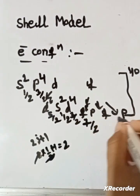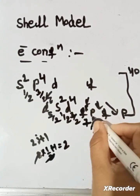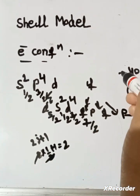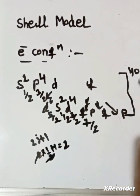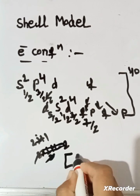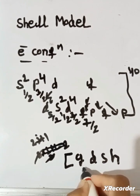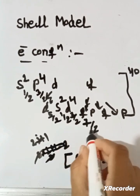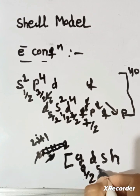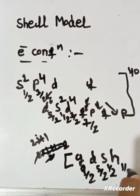For F, j = 7/2, so nucleons = 8. Then F (j=7/2) again, then D (j=5/2), then P (j=3/2), then S (j=1/2), filling 40 nucleons. The next shells include D, S, H: F (j=7/2), G (j=9/2), G (j=9/2), D (j=5/2), S (j=1/2), and H (j=11/2), completing filling up to 92 nucleons.